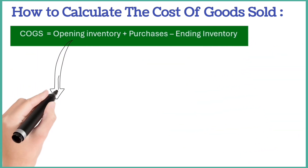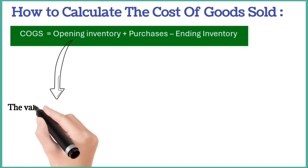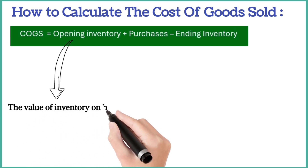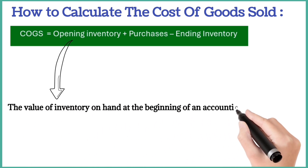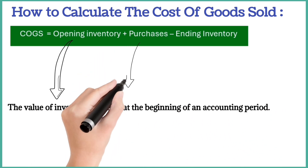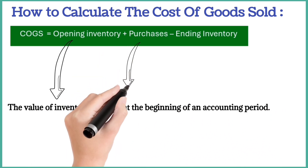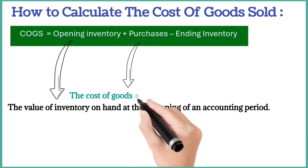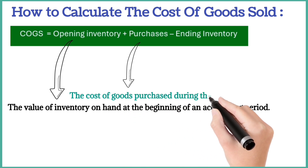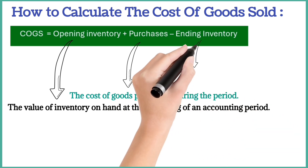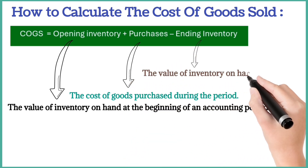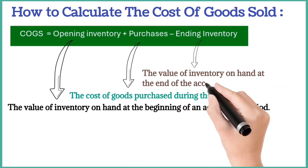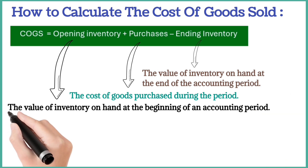Beginning inventory is the value of inventory on hand at the beginning of an accounting period. Purchases is the cost of goods purchased during the period. Ending inventory is the value of inventory on hand at the end of the accounting period.